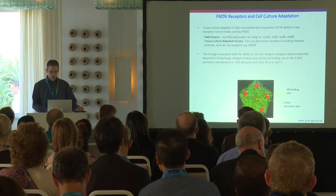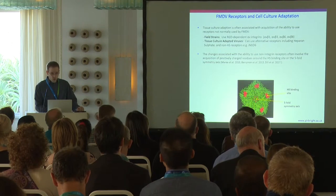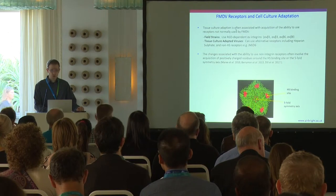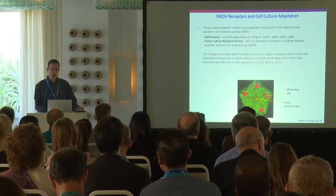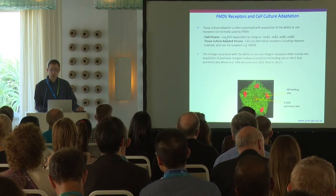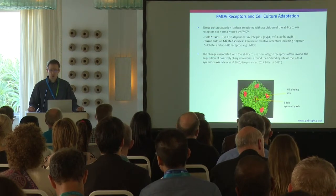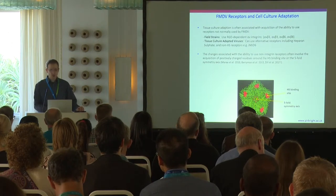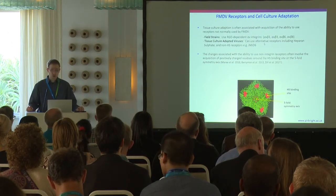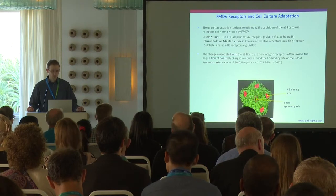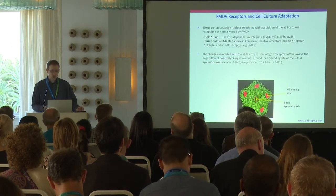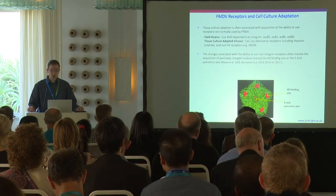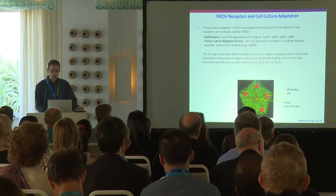When you adapt field viruses to cell culture, it's often associated with the acquisition of the ability to use alternative receptors not normally used by the field viruses. Field strains use RGD-dependent alpha-V integrins, and alpha-V-6 is the most important of those. Tissue culture-adaptive viruses can often use alternative receptors, including heparan sulfate and non-heparan sulfate receptors. Changes associated with the ability to use these non-integrin receptors often involve the acquisition of positively charged residues at various points in the capsid.